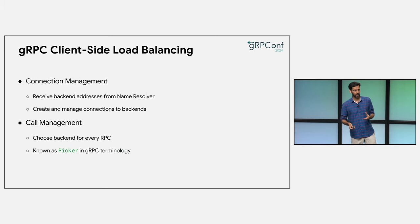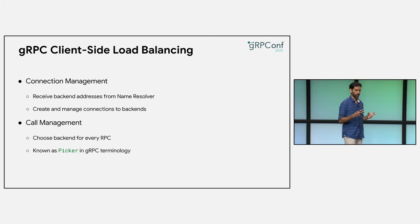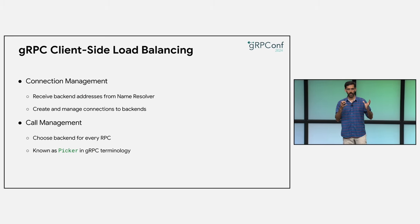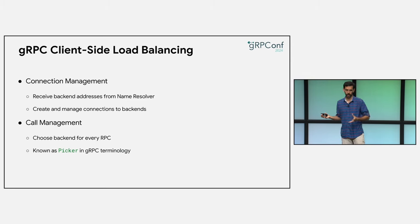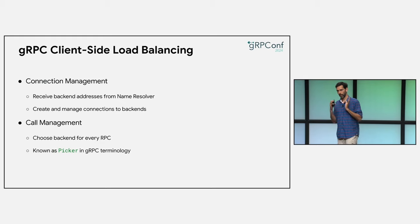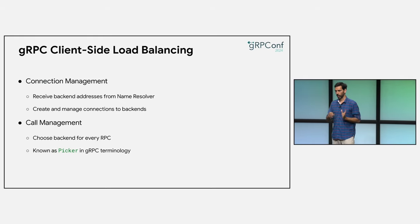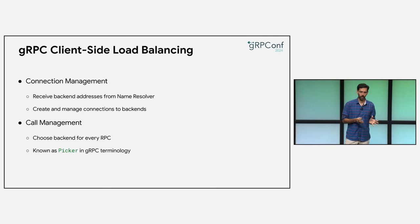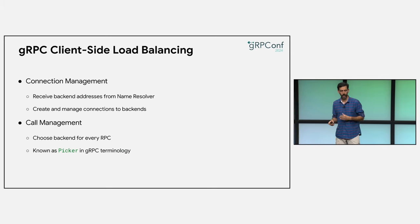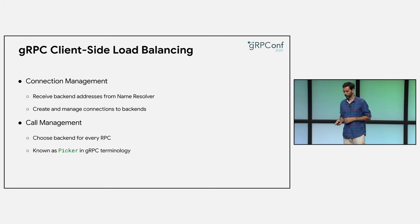An LB policy implementation mainly consists of two components. One is the connection management component, which receives backend addresses from the name resolver and decides when and how to create connections to those addresses. The second is the call management component, which is invoked for every request. When an RPC is made by the client, this component chooses the subchannel or backend that will be used for that RPC. We call this component the picker in gRPC.